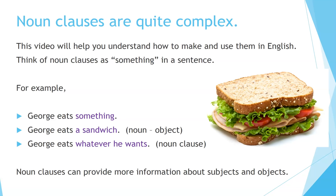Think of noun clauses as 'something' in a sentence. For example, George eats something. George eats what? George eats a sandwich. In this case, a sandwich is a noun, and it functions as the object of the sentence. George eats whatever he wants. 'Whatever he wants' is a group of words called a noun clause, which tells what George eats. Noun clauses can provide more information about subjects and objects in sentences.